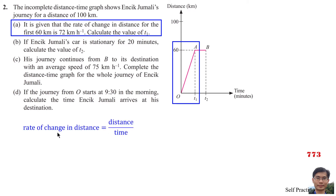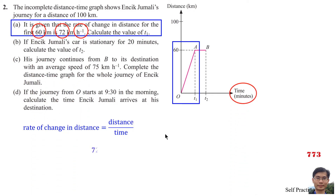Rate of change in distance equals distance per time, which is the gradient. Rate of change in distance is 72 km per hour. Distance is 60 km. So time T1 equals 60 divided by 72, then convert to minutes — T1 equals 50 minutes.